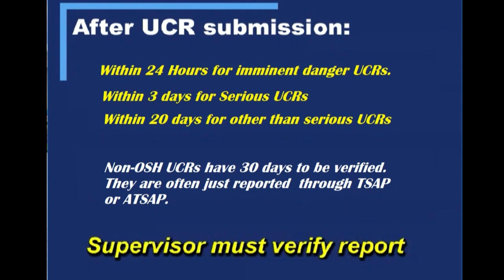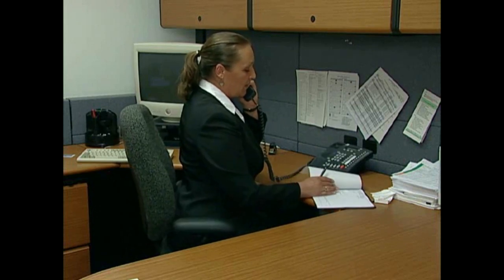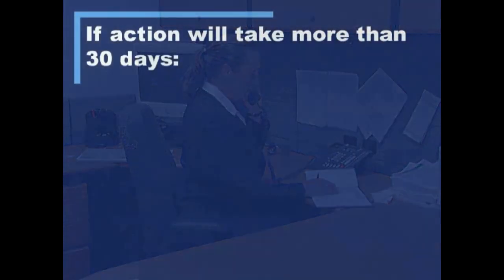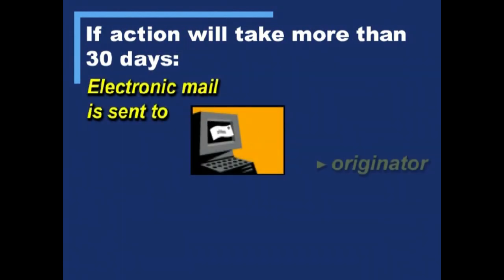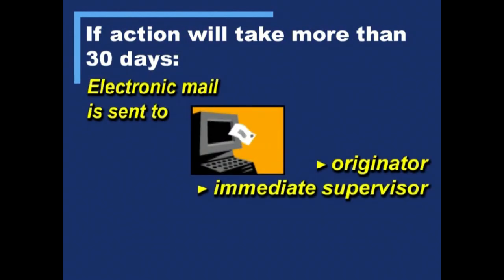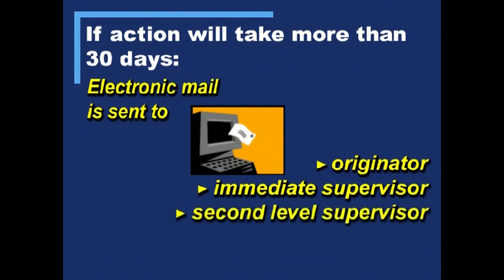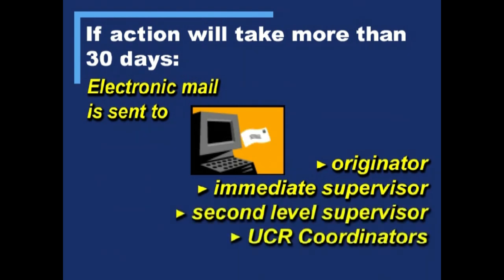The supervisor has 10 days to verify the report and is responsible for ensuring that the UCR is objectively evaluated, acted upon, and addressed promptly within 30 days. If a UCR cannot be resolved at the local level, it should be sent to the office best equipped to address the problem. If the action to resolve the UCR will take more than 30 days, additional emails are sent to the originator, the immediate supervisor, the second level supervisor, UCR coordinators, and the headquarters program office to explain the delay.